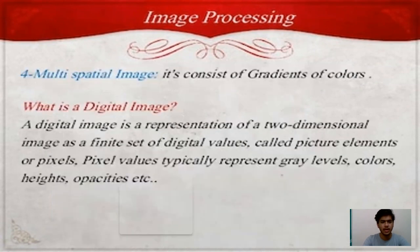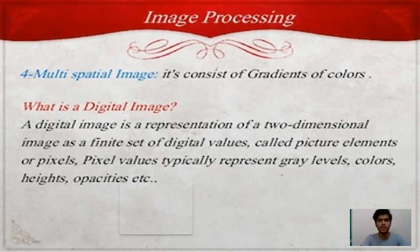The fourth one is multi-spatial image. It consists of gradients of colors. What is a digital image? A digital image is a representation of a two-dimensional image as a finite set of digital values called picture elements or pixels.